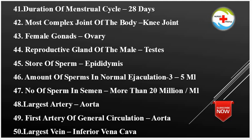Number of Sperm in Semen: More than 20 million per 1 ml. Largest Artery: Aorta. First Artery of General Circulation: Aorta. Largest Vein: Inferior Vena Cava.